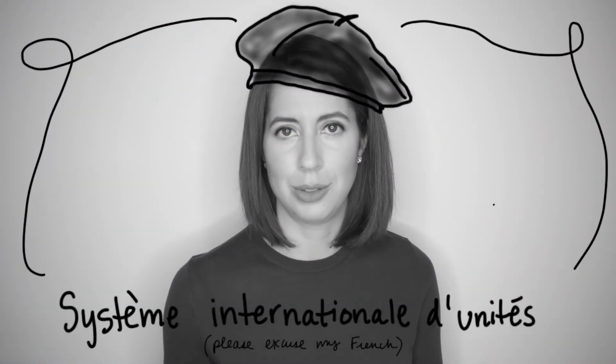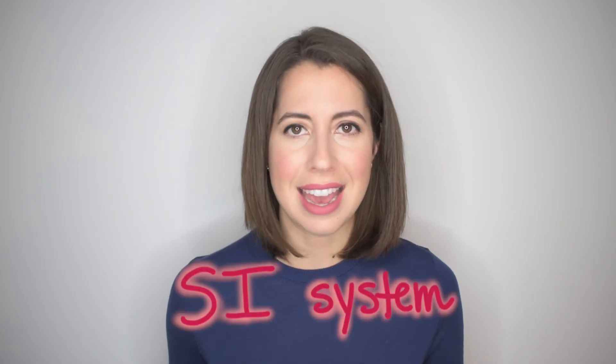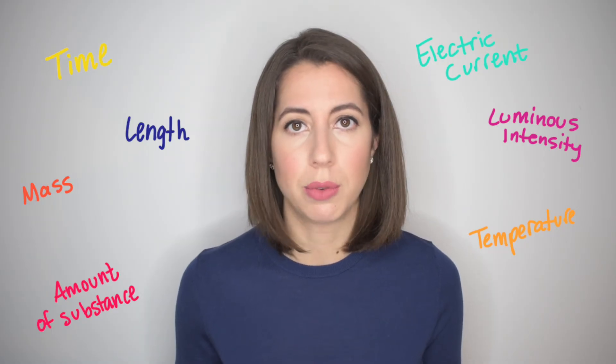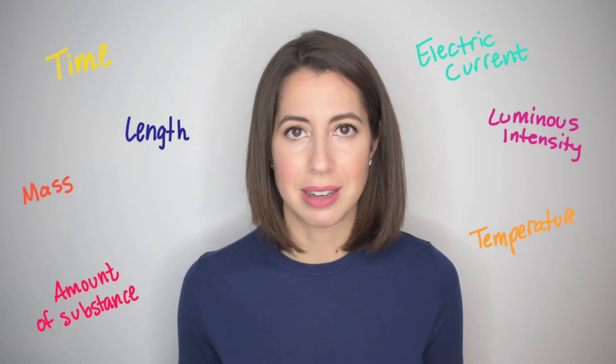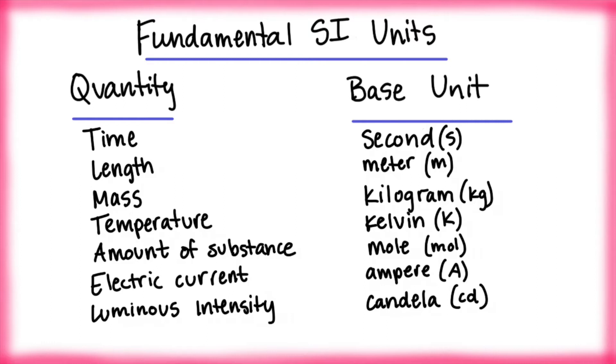To solve this problem, the Systeme Internationale d'Unité, also known as the SI system, was established. This system standardized the units for seven different types of quantities using the metric system. Take a look at the fundamental units for each quantity. Notice that volume is not one of them.